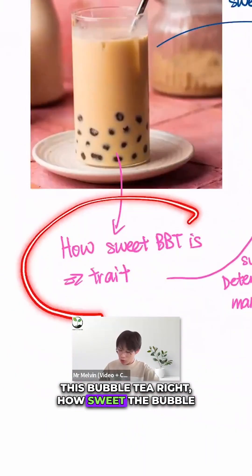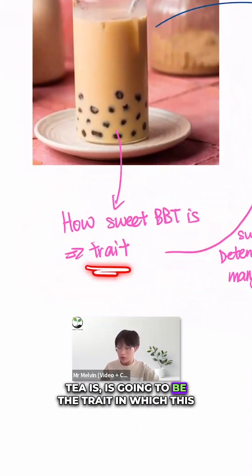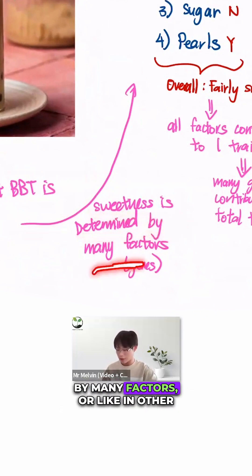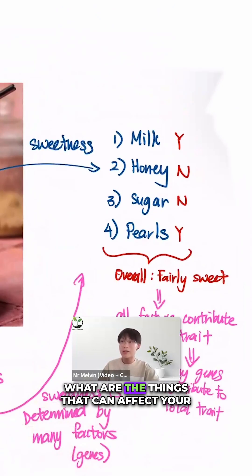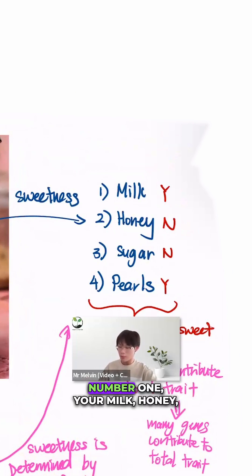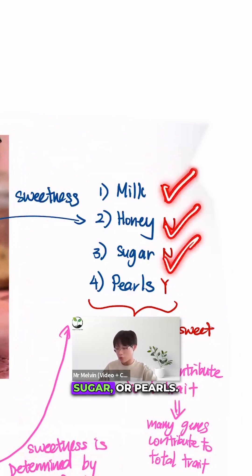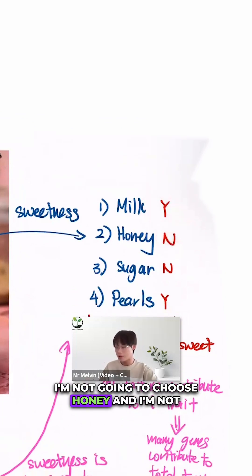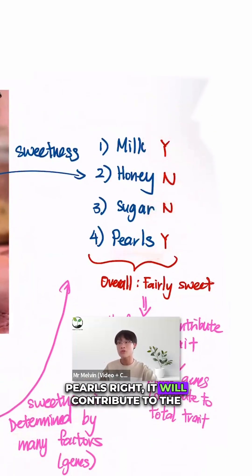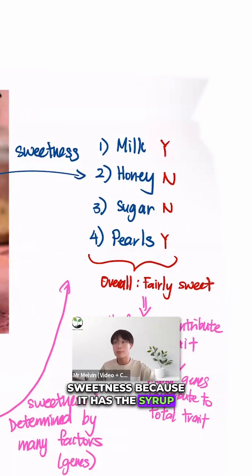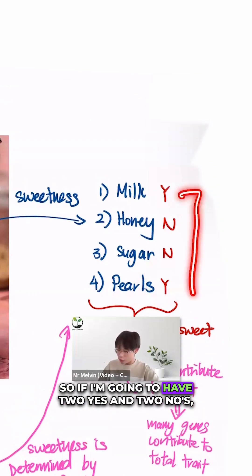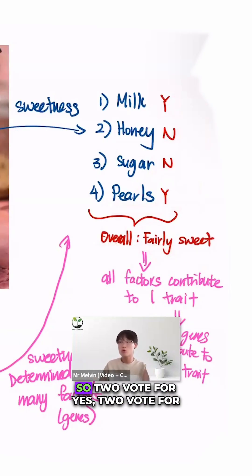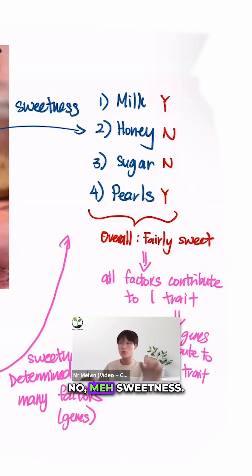Think of bubble tea — how sweet the bubble tea is will be the trait, and this sweetness is determined by the manufacturers, in other words your genes. What things can affect your bubble tea sweetness? Your milk, honey, sugar, or pearls. In my case, I would choose milk, not honey, and no sugar. The pearls will contribute to the sweetness because they have syrup added. So if I have two 'yes' and two 'no' ingredients overall, it's going to be fairly sweet — two contributing yes, two contributing no, means mere sweetness.